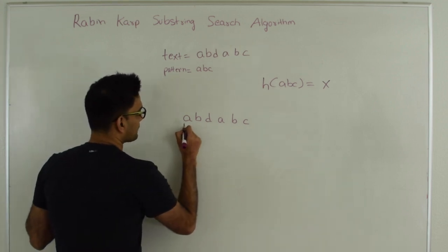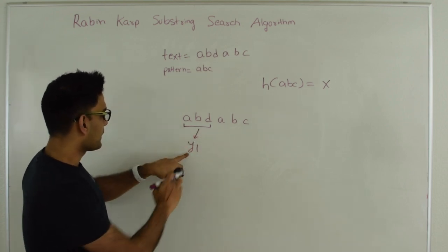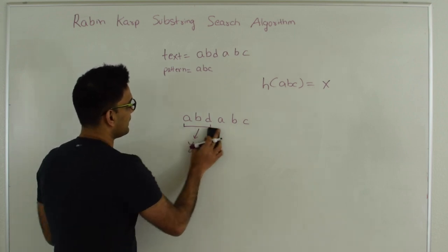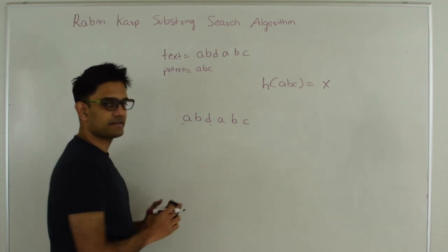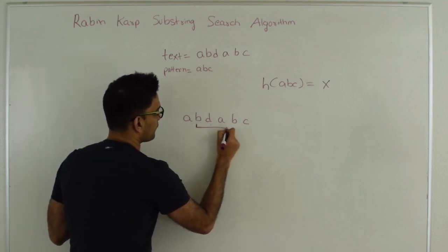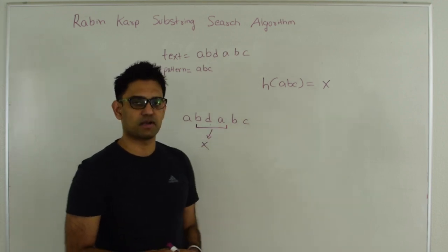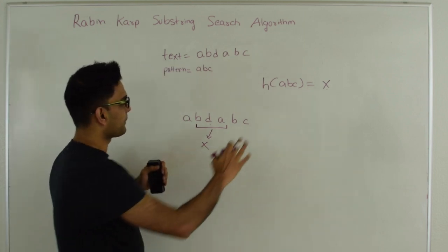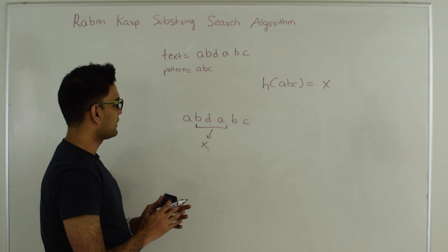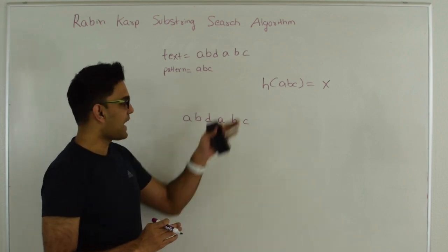We take the first 3 characters — let's say this generates a hash Y1. We compare Y1 with X and both numbers are different, which means ABD cannot be the same as ABC, because if the hash is not the same then there is a guarantee that the substring is not the same as the pattern. We move on by one more character to BDA. In this case let's say coincidentally it generates the same hash as the pattern. So what we do is compare this pattern with this substring — A is not the same as B, which means we don't have a pattern match here. Even though there was a hash match, the actual substring did not match.